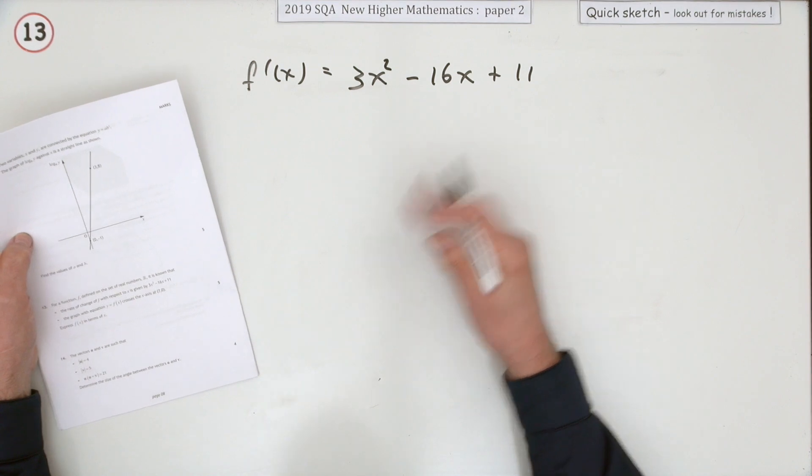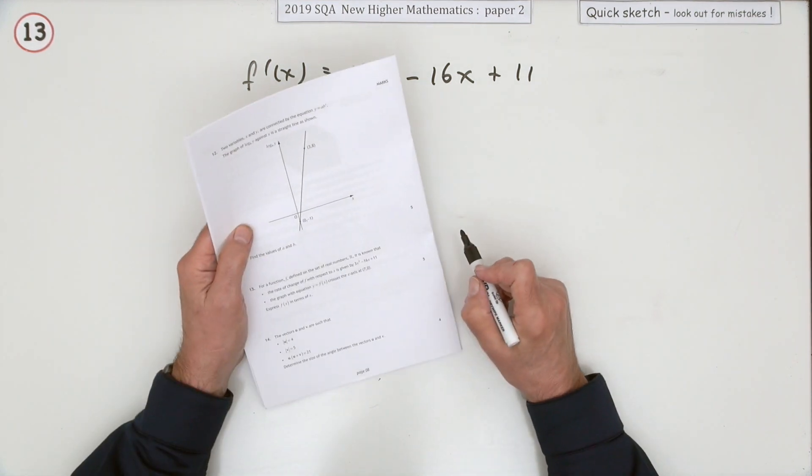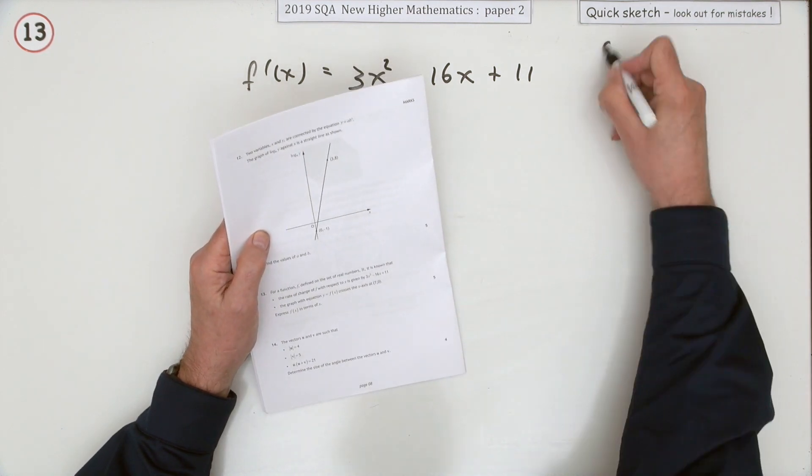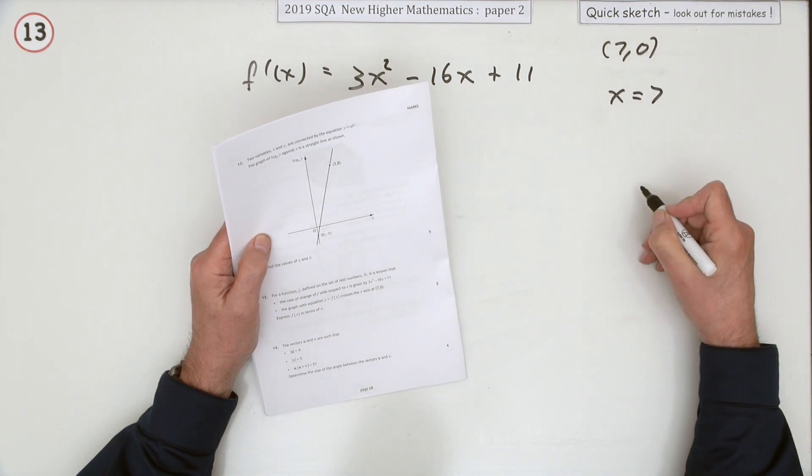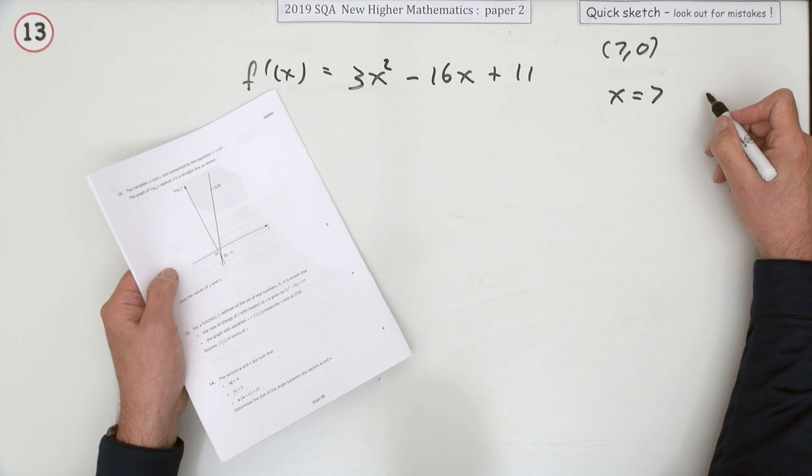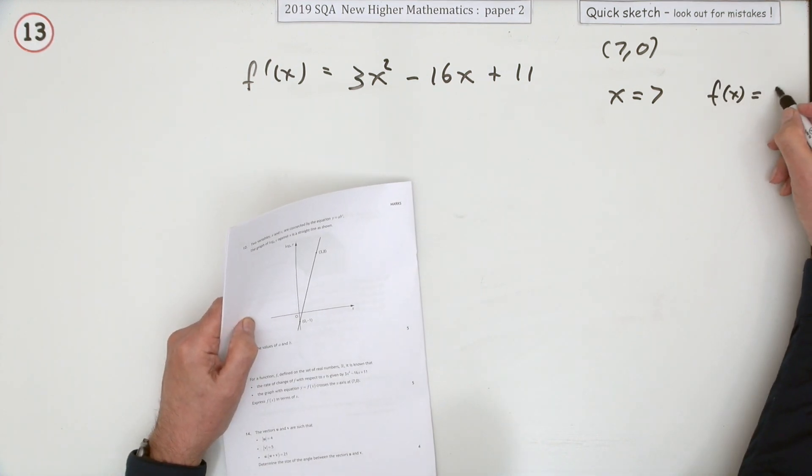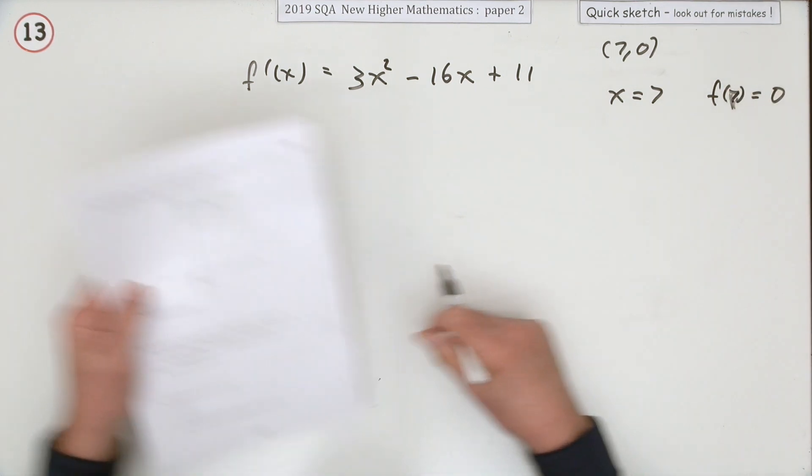Some extra points tell you here the graph would cross the x-axis at seven zero. So what crosses at seven zero? That means x equals seven and the answer, in other words f of x equals zero, or specifically f of seven equals zero.